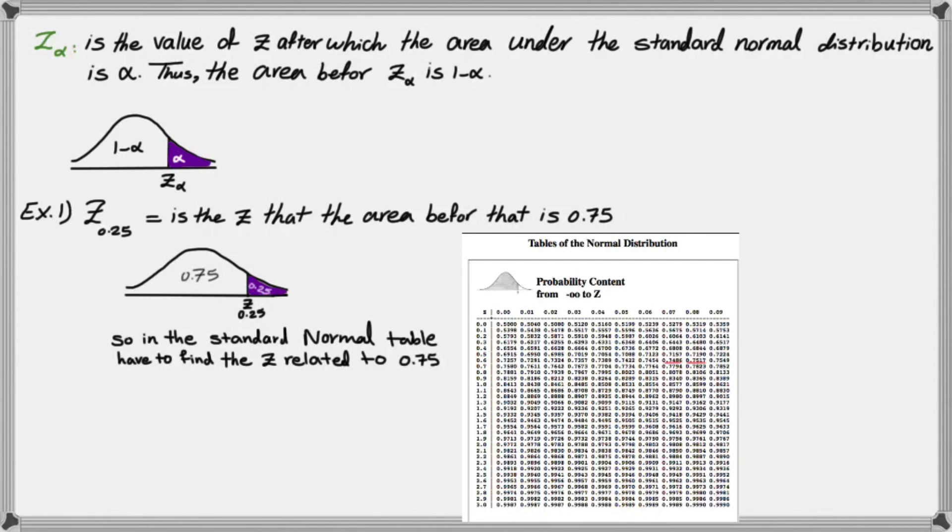So if I find 0.75, it's something between these two numbers, which is 0.67 and 0.68. And we can get the average of the two numbers and find the value of Z of 0.25. So then the average of 0.67 and 0.68 is 0.675.